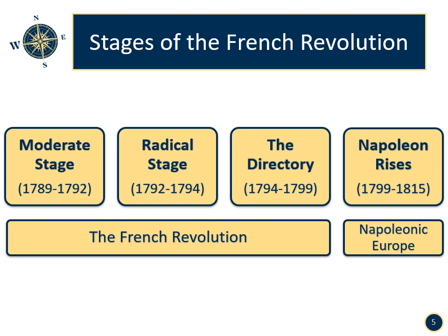The stages of the French Revolution: the moderate stage took place from 1789 to 1792 and involved the overthrow of the king. The radical stage took place from 1792 to 1794 and involved the execution of the king and queen and the Reign of Terror. The Directory took place between 1794 and 1799. The Napoleonic era was from 1799 to 1815.